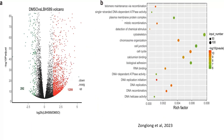In this slide, we will explore how LBH589 and Saha regulate NET9 expression in breast cancer cells. NET9, a protein linked to cell migration and metastasis, is shown to be upregulated both in vitro and in vivo. Understanding the molecular effects of these inhibitors can help us uncover their roles in cancer metastasis and potential therapeutic implications.